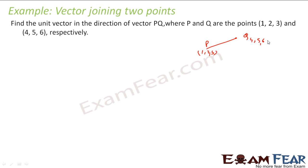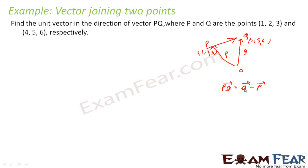If I have some origin here, this is my Q vector, and this is the PQ vector going from P to Q. This is my P vector. So my PQ vector is nothing but Q vector minus P vector, because P vector plus PQ vector equals Q vector.